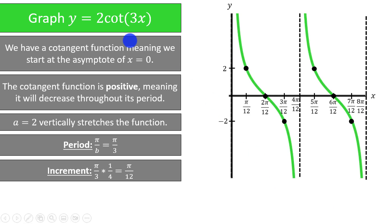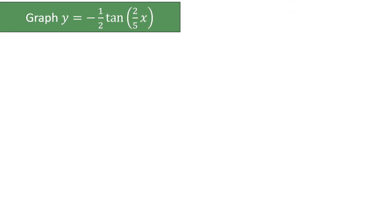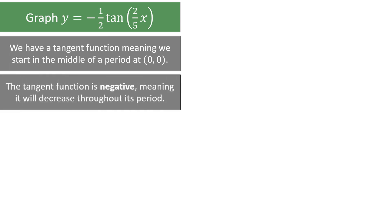We can connect the dots to draw the graph of y equals 2 times the cotangent of 3x. Let's try to graph y is equal to negative 1 half times the tangent of 2 fifths x. We have a tangent function, meaning that we will start in the middle of a period at (0, 0). This is a negative tangent function, meaning it will decrease throughout its period. Typically a positive tangent function would increase throughout its period, so the negative sign means we will do the opposite.